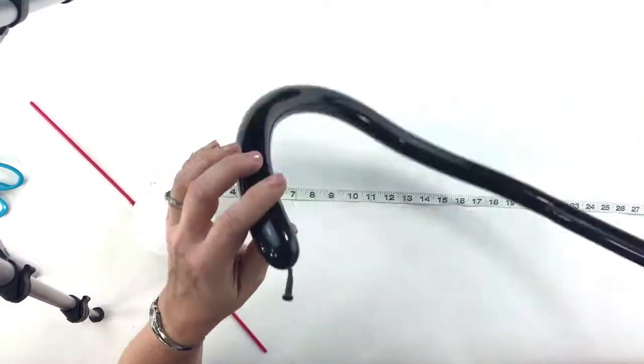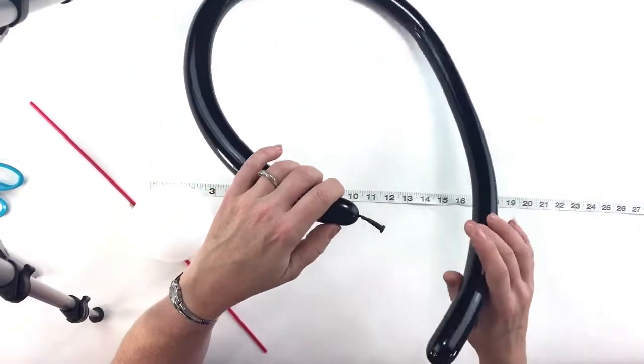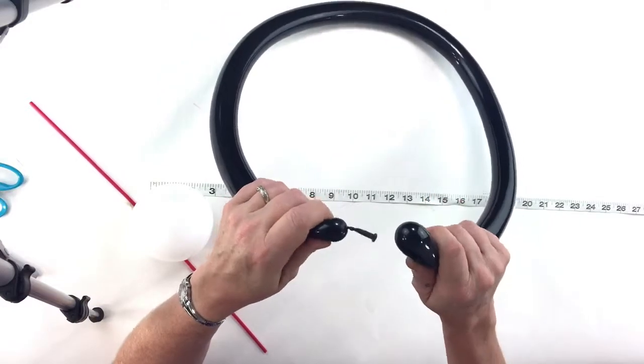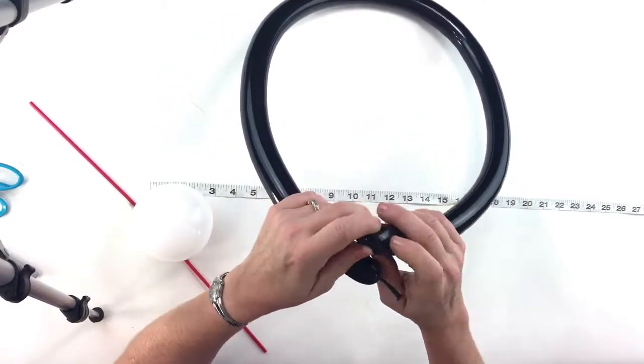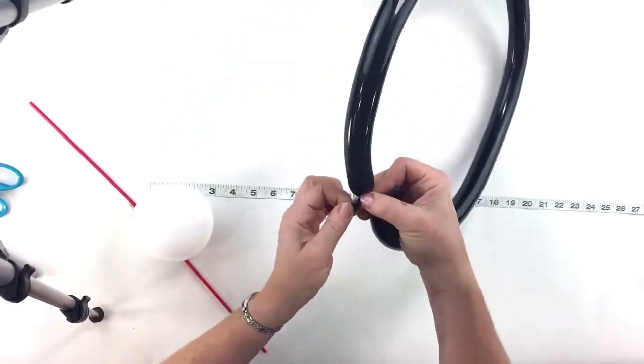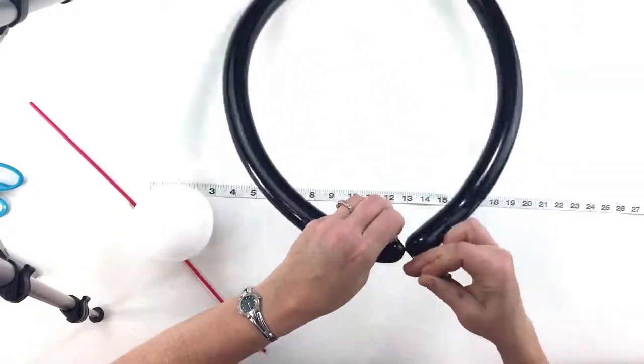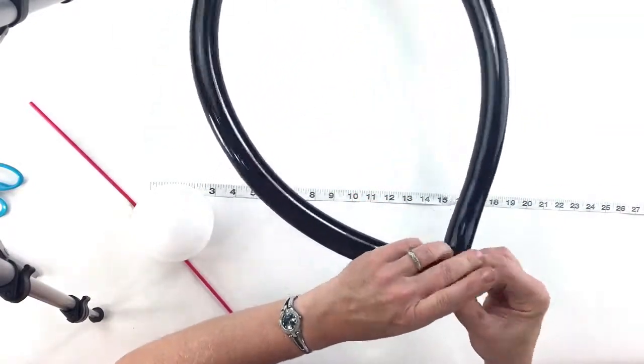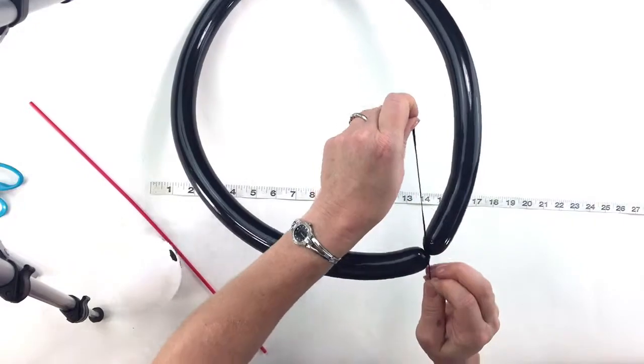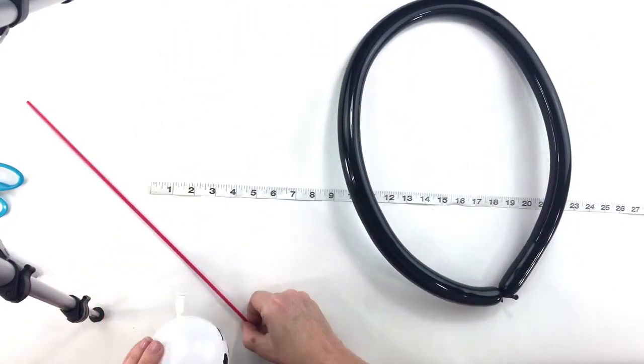Then inflate a 160. I'm going to use black ones for the wings the whole way and let a puff of air out so it's a little mushy. Tie the ends together, so squeeze a little bit of the air out right there at the very end and just tie this together right like that.